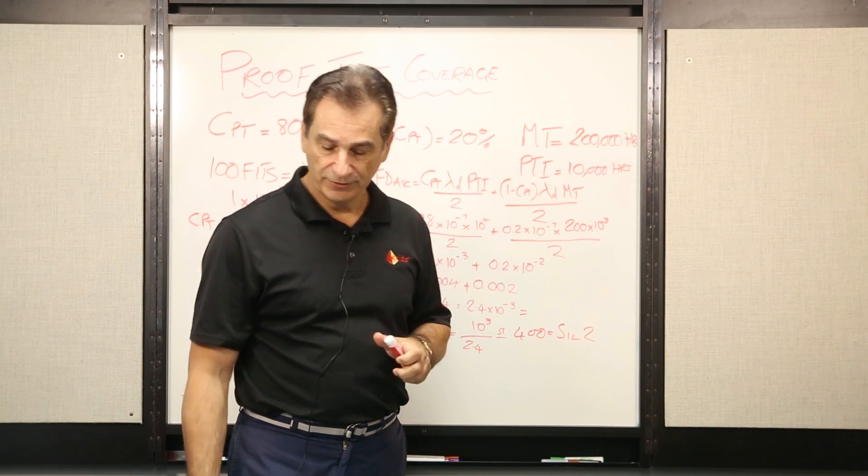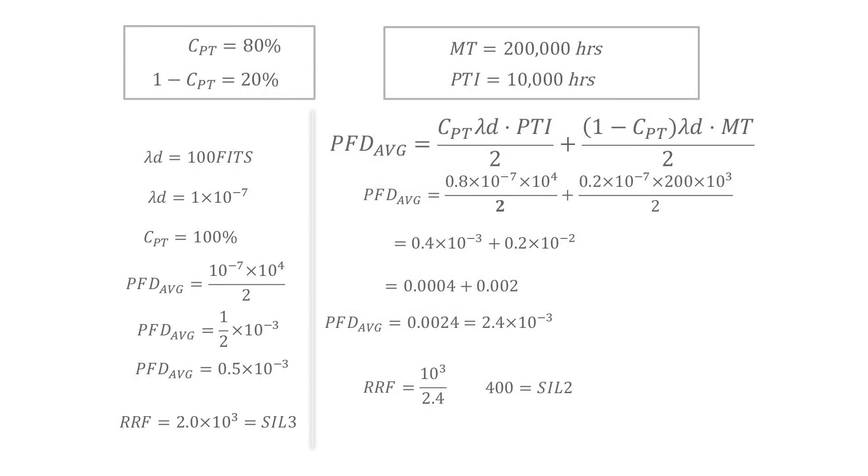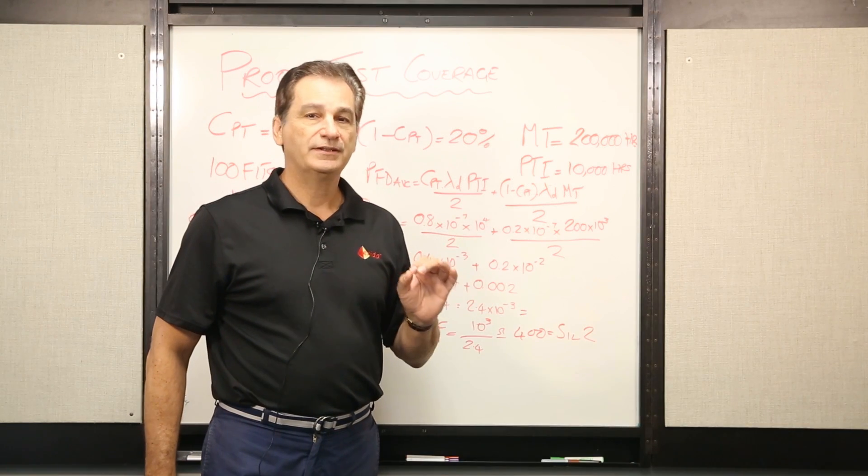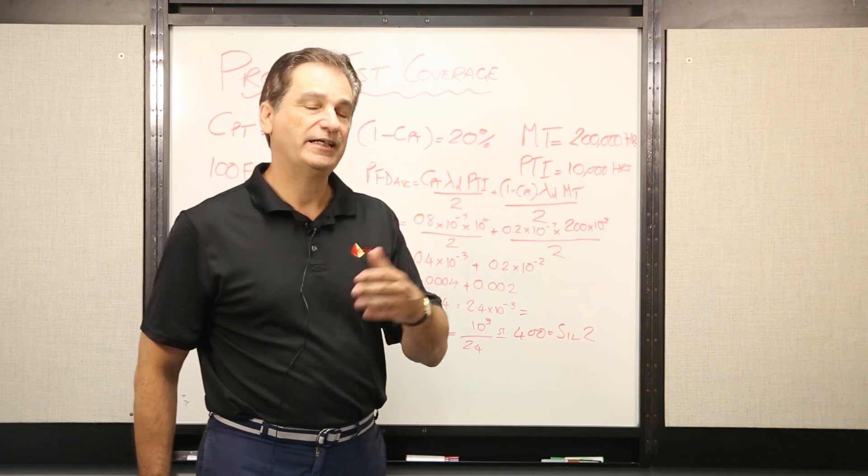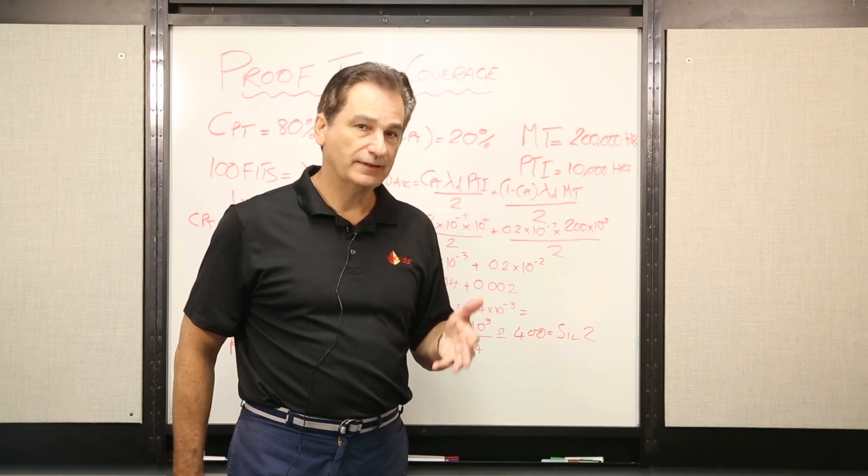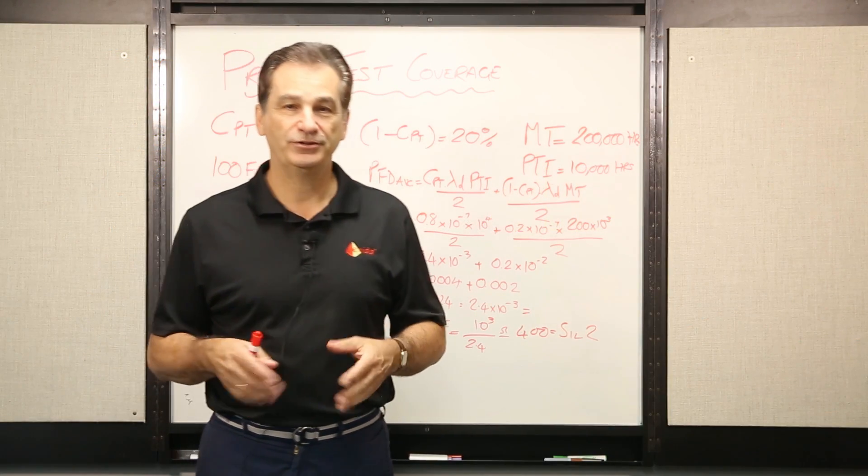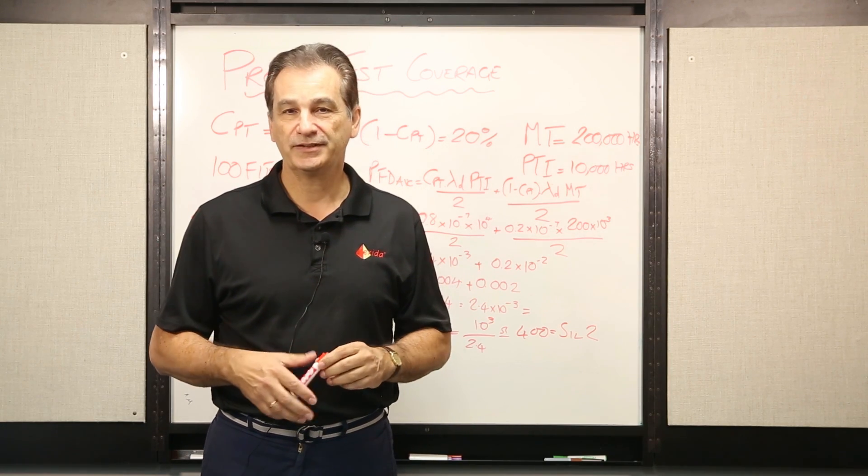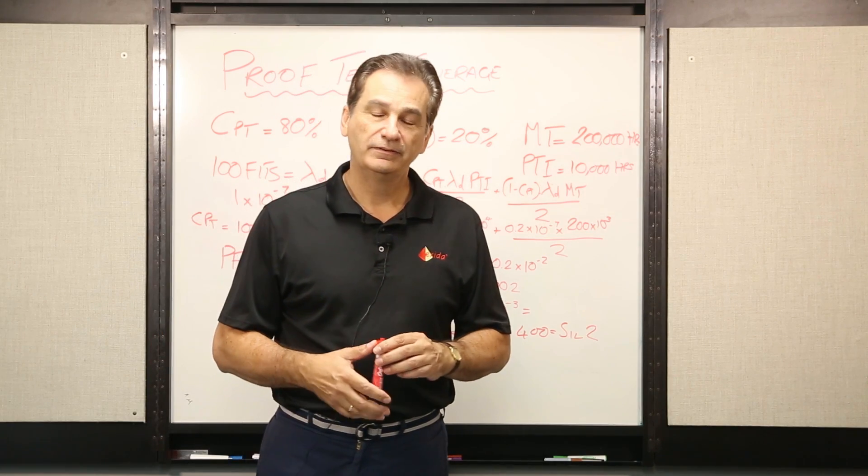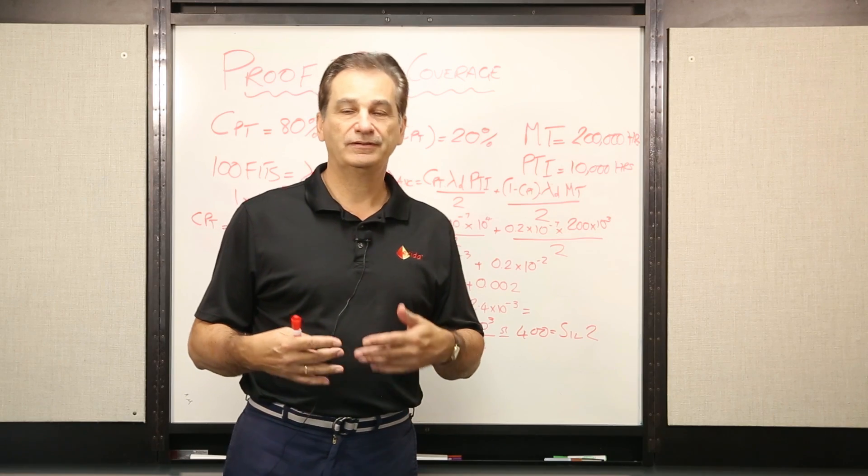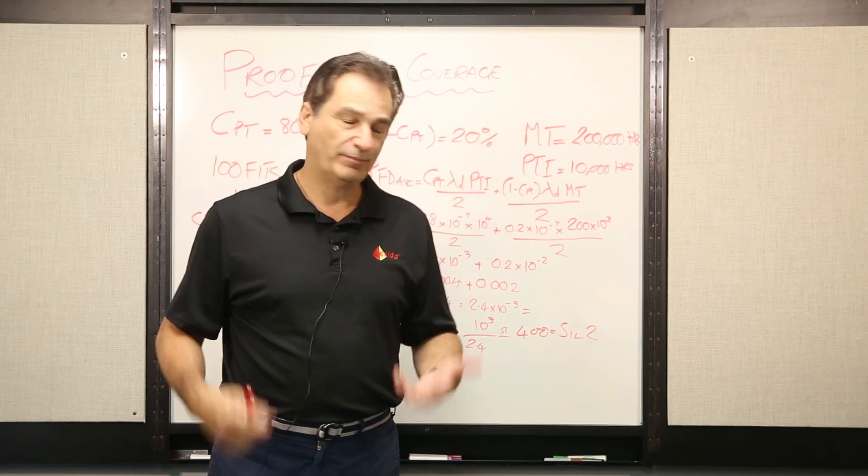And the proof test coverage factor will be taken into consideration in the calculation in Exsilencia. Of course, let us not forget, these are simplified equations just to illustrate the point. There are many variables that you need to consider when looking at calculating the SIL for a SIF. And the PFD average is just one part of it. We obviously have to meet the hardware fault-tolerant requirements and we have to meet the systematic capability aspects. Those have to be considered. Now, of course, if you have a tool like Exsilencia, Exsilencia has certain features built into it, such as being able to suggest a proof test coverage based upon the equipment you've selected and what the manufacturer is recommending as a proof test coverage for the device. Also, Exsilencia can take into consideration applications such as dirty service, clean service, tight shut-off. There are lots of other variables that Exsilencia considers as well that is not part of this simplified approach.